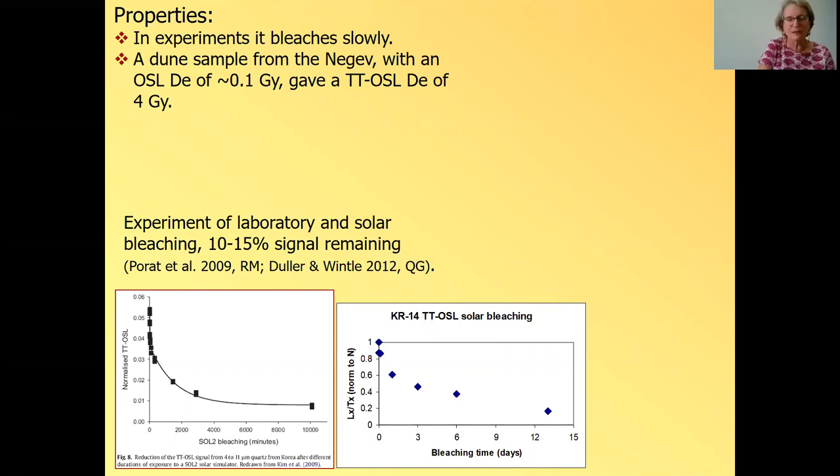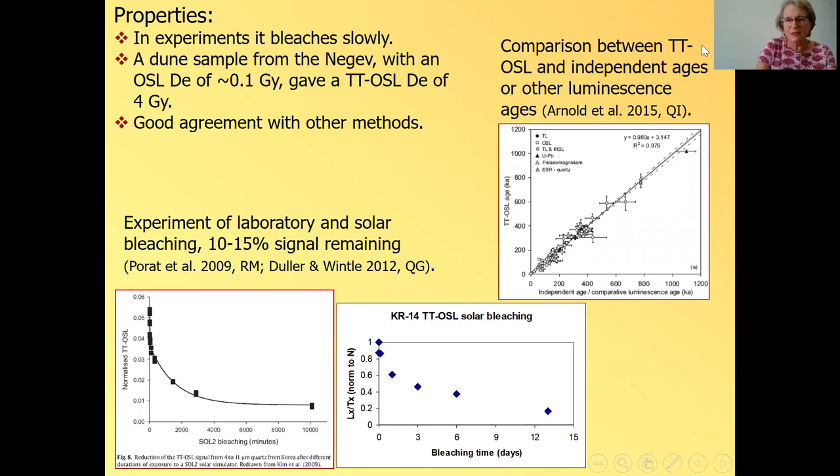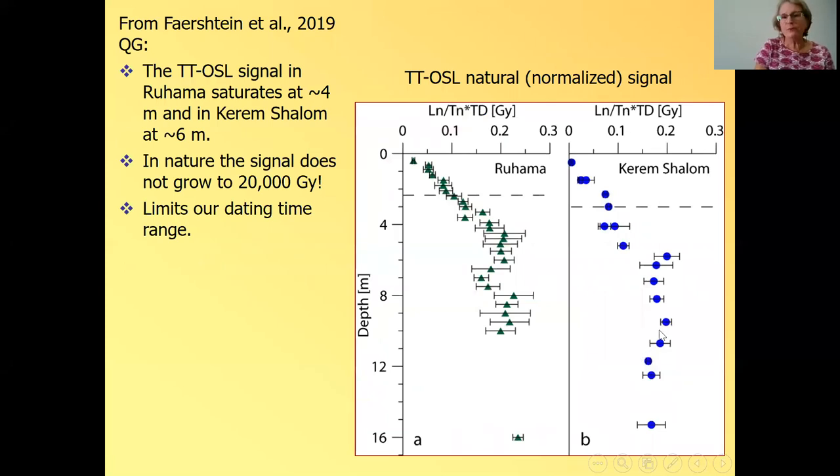But if we take a look at modern samples, for example, there's a dune sample from the Negev that you measure TTOSL, the OSL DE is nothing. And the TTOSL DE is four gray and four gray is really very low compared to the very high DE values that we want to measure. So in nature, this signal can be bleached. And we know that the TTOSL ages gave a pretty good agreements with other methods. So this is a compilation by Arnold in 2015, and it took all the available TTOSL ages, which have some sort of independent age control, either by other luminescence methods or ESR or uranium lead and so on. And you can see that there's a pretty good agreement between the TTOSL ages and the other age control up to about a million years. So that's very reassuring.